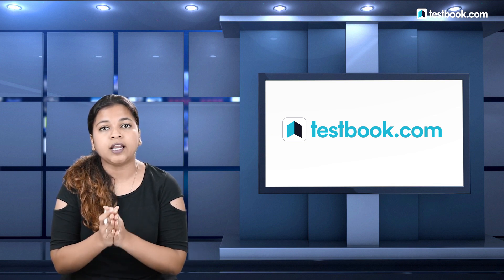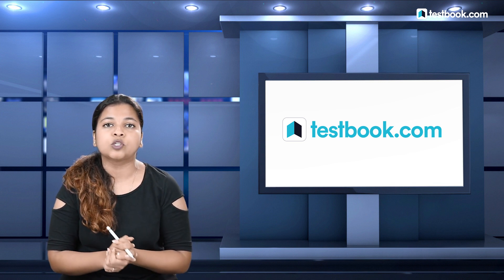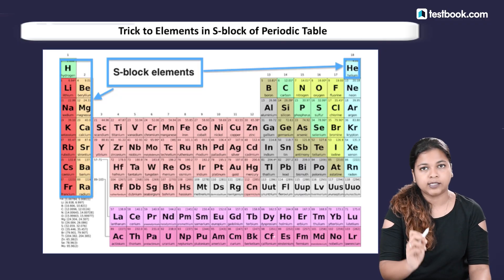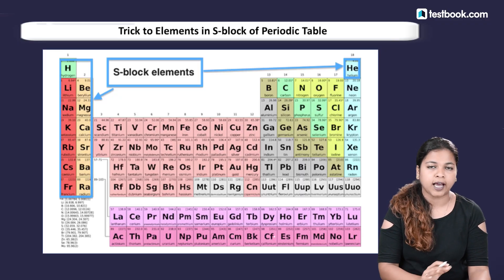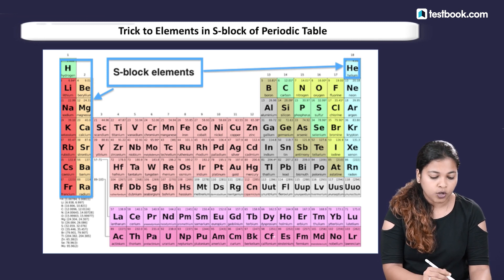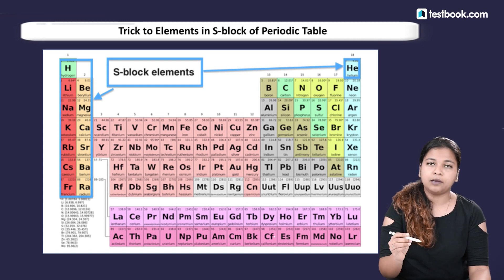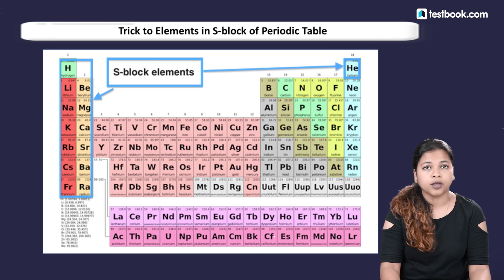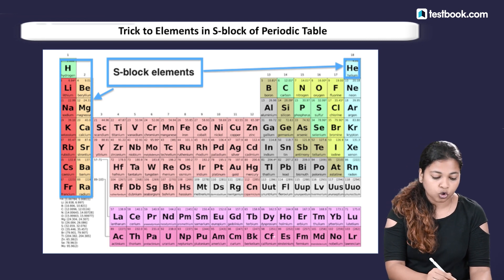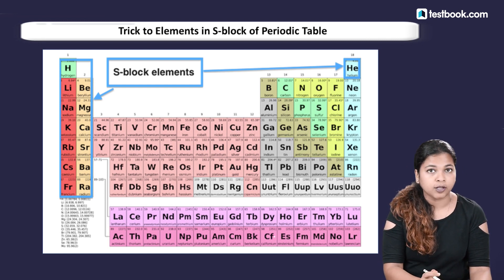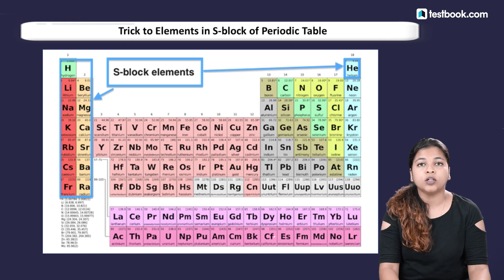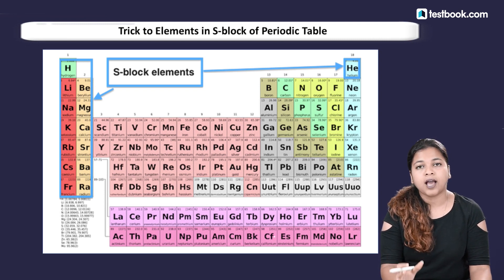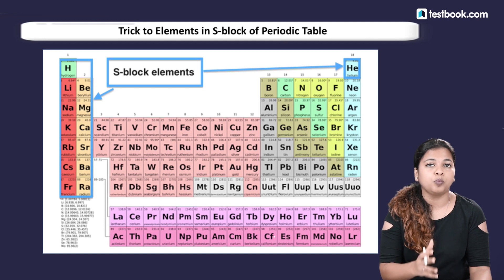In today's video we will remember the S block in the periodic table. As you can see on the screen, the elements of the S block are on the left side, with one element — Helium — on the right side. The elements shown in red boxes are the Alkali metals of Group 1, and the elements shown in yellow are the Alkaline Earth metals of Group 2 in the S block.